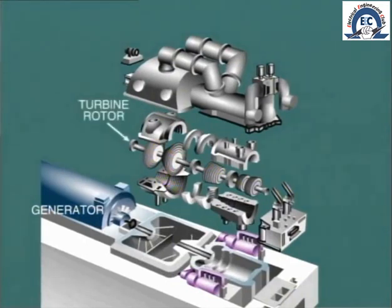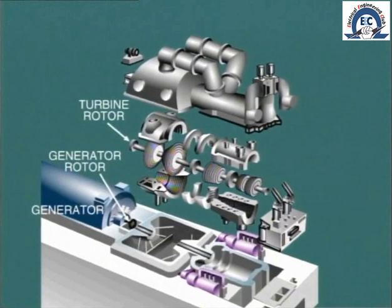The turbine rotor is directly coupled to the generator rotor to transfer the mechanical energy produced in the turbine to the generator, where it is converted into electrical energy.